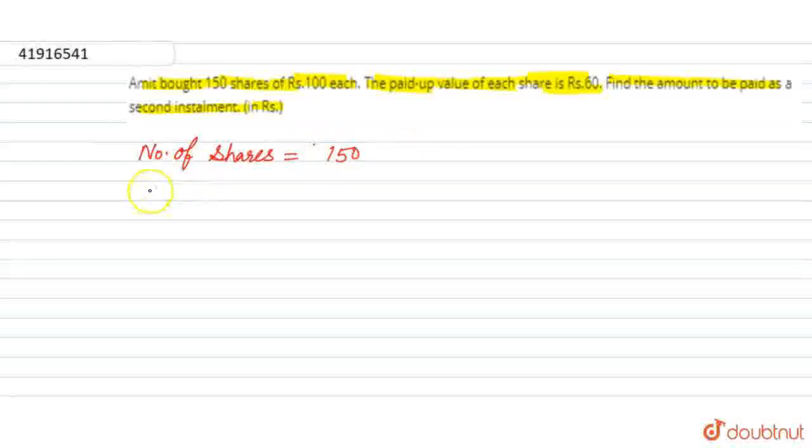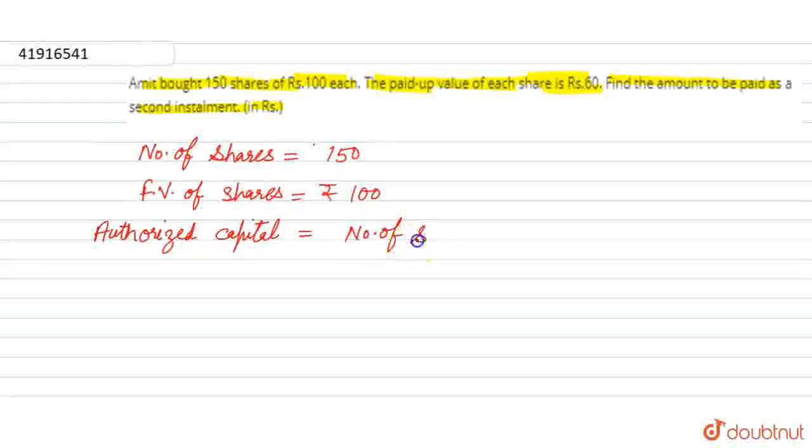Okay, then next one is face value of shares, that is equal to rupees 100. So now authorized capital we can calculate. Now authorized capital will be equal to the total amount invested, which equals number of shares multiply by face value of shares.